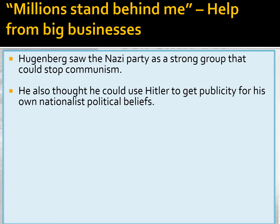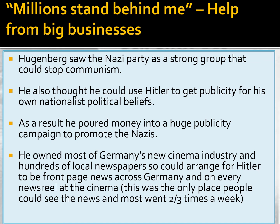Hitler was famous for quoting 'millions stand behind me' - meaning not just the millions of people who had supported them during the Great Depression era, but also millions of marks in money. Alfred Hugenberg was one of these people who put a lot of money into Hitler and the Nazi party's propaganda. He saw the Nazi party as a strong group that would stop communism, and he also thought he could use Hitler to get publicity for his own nationalistic political beliefs. He owned most of Germany's new cinema industry and hundreds of local newspapers, so he could arrange for Hitler to be on front page news across Germany and on every newsreel at the cinema.